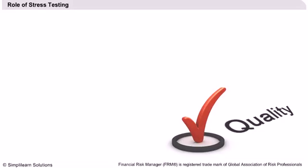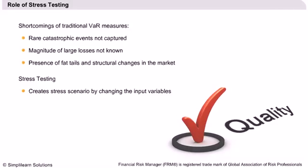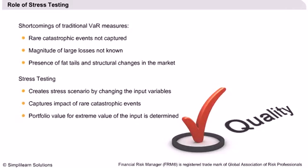Role of stress testing. As we have learned earlier, the major drawback of the traditional VAR measures is that they do not capture the impact of rare catastrophic events where the magnitude of losses are unknown. We have also learned that the return distributions do not have true normal distributions but exhibit fat tails. This drawback seriously affects our estimate of the reserve required in scenarios of distress. Stress testing overcomes this problem. It creates a stress scenario by changing the input variables and then analysing the impact of the change. As such, the impact of potential catastrophic events is also captured. The portfolio value for the extreme value of the input is thus determined, allowing us to accurately predict the reserve capital needed in times of distress.